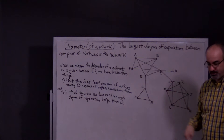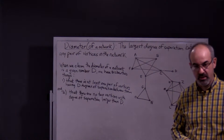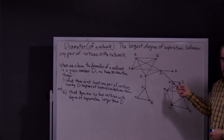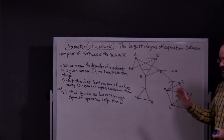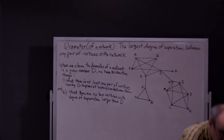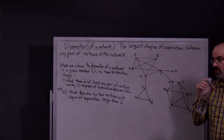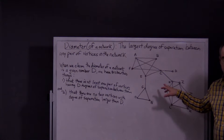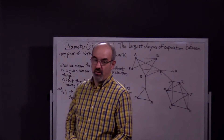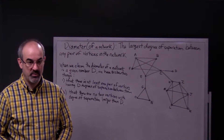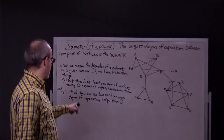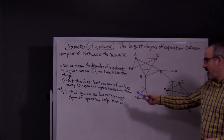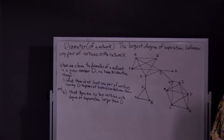This is the same network from the last video on degrees of separation. Knowing that, we know that the diameter of this network is not three. The diameter is not three because we already found some vertices that have a degree of separation of four. You can't state that the diameter is three because that would mean there are no two vertices with a degree of separation larger than three, but there are — there are quite a few, actually.